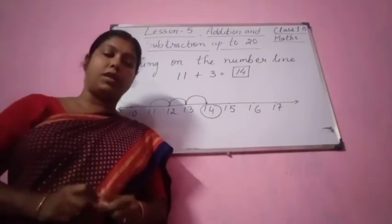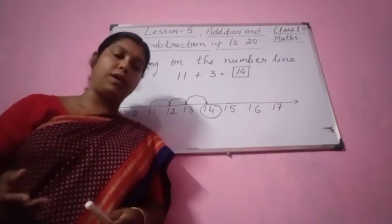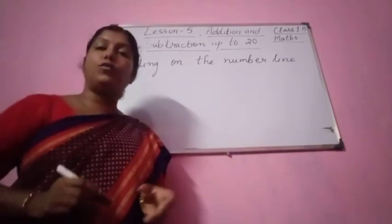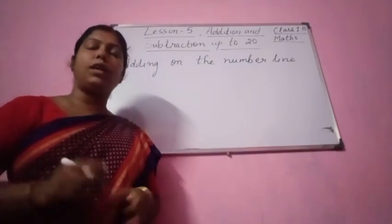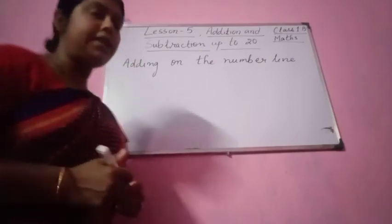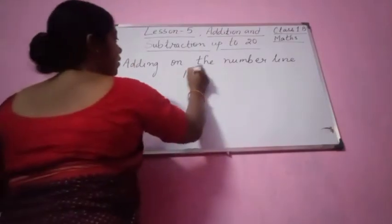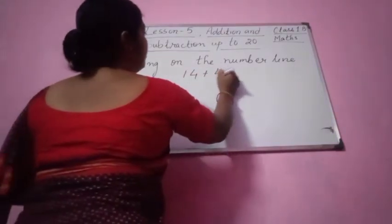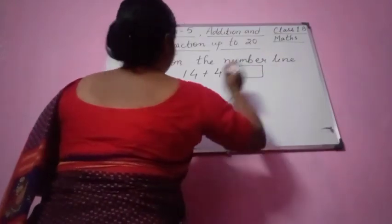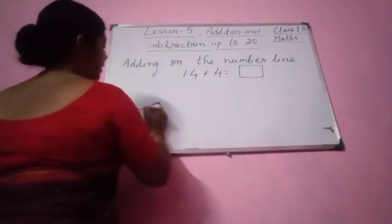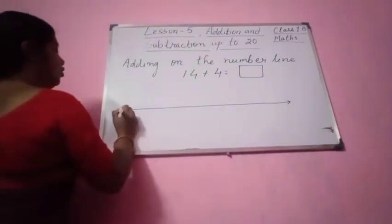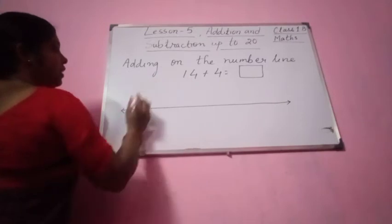One more we will do on the number line. We are doing adding on the number line. Let us take one more number: let us take 14 plus 4. You see here, let us take 14 plus 4 equal to how much? Please draw a number line everyone. Put two arrows. Draw a number line. See, 14 is here.